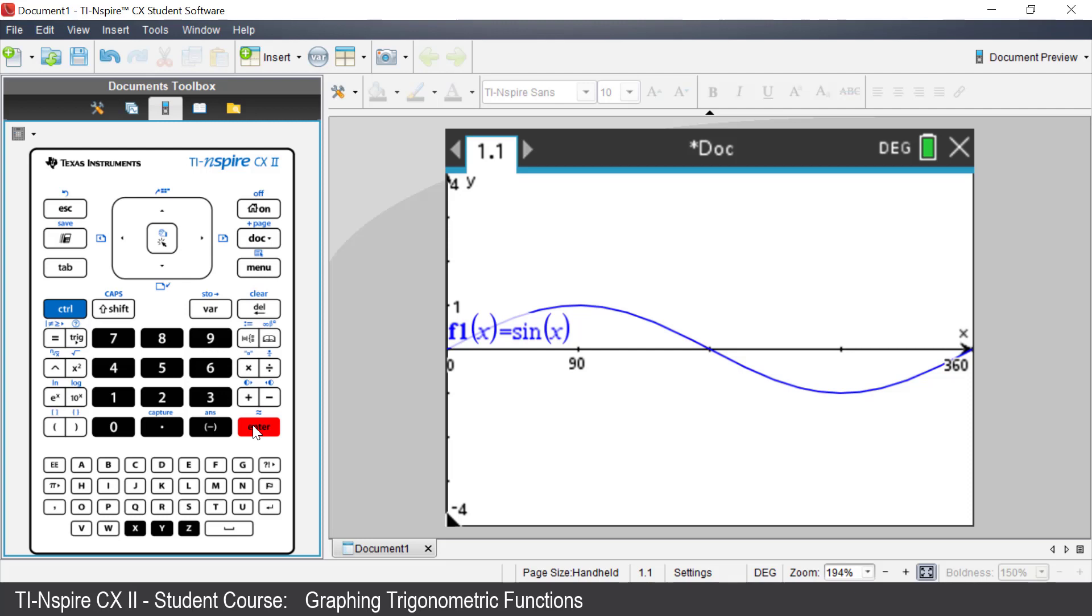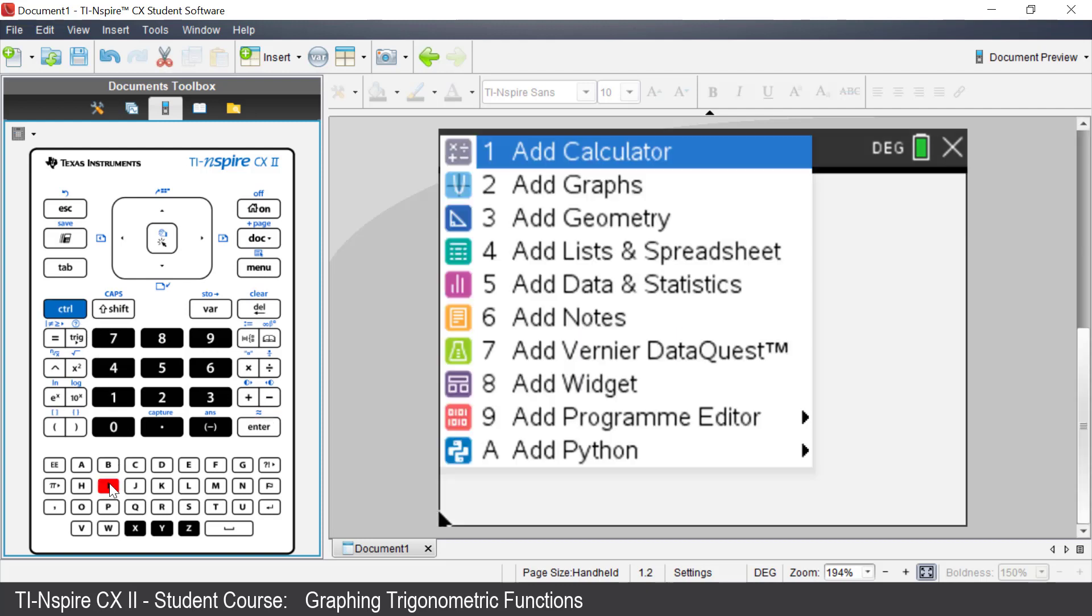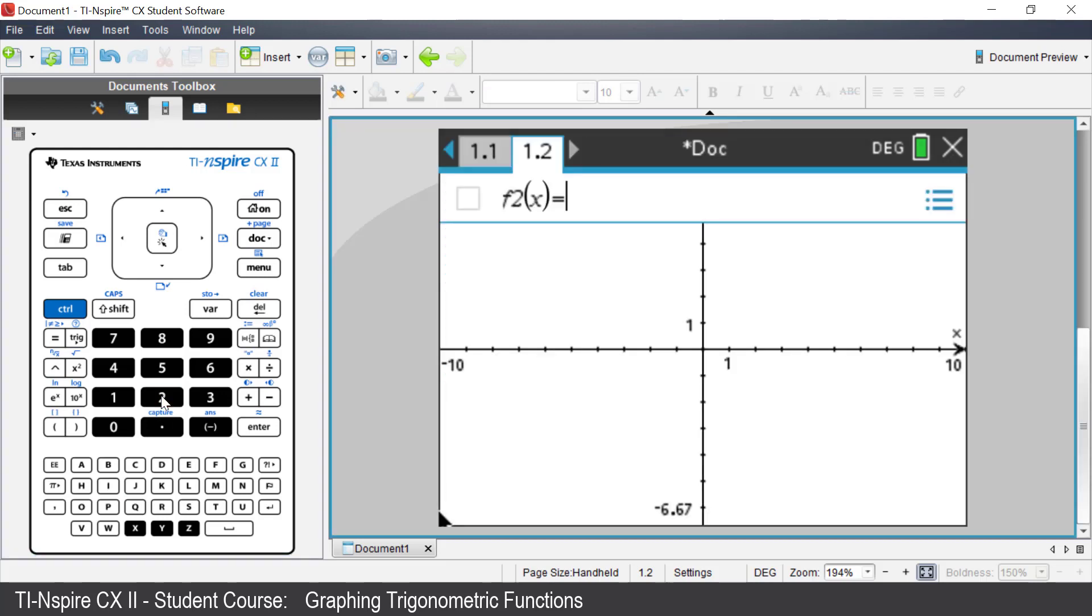This method works in reverse. If you start in degrees, then want to graph using radians. Insert a new graphs application. Select Add Graphs. Change the mode back to Radians.